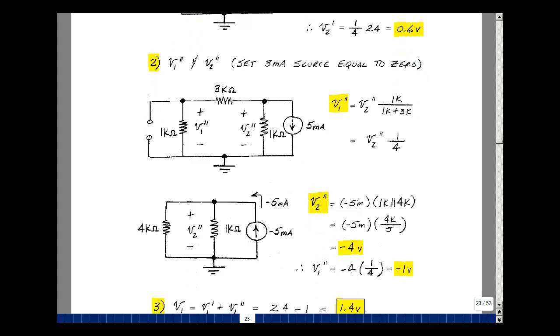Find the double prime result. Set the 3 milliamp source equal to 0. It's an open circuit. And I'm going to solve for V1 and V2 due to the second source. I'm going to call those double prime.